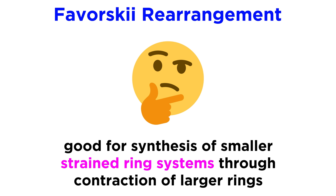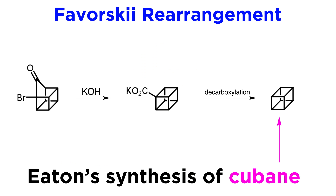Applications for this chemistry in synthesis are plentiful, especially when a larger ring size is easy to make and ring contraction leads to rather strained systems. In Eaton's famous synthesis of the very strained cubane, the final cube structure was established with a Favorski ring contraction. The last step was a simple thermal decarboxylation, which yielded the target cubic structure.